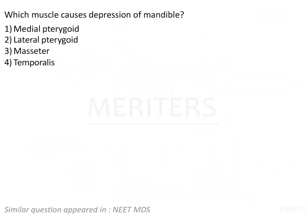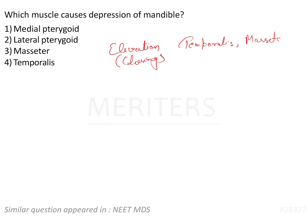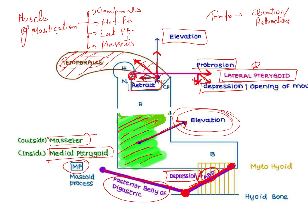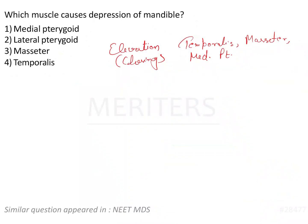Now I'll give you a table to remember the various movements of the mandible. First is elevation, which means closing of the mouth. The muscles responsible for elevation are: temporalis, masseter on the outer side of the ramus, and medial pterygoid on the inner side. So elevation is caused by masseter and medial pterygoid, as well as the temporalis.